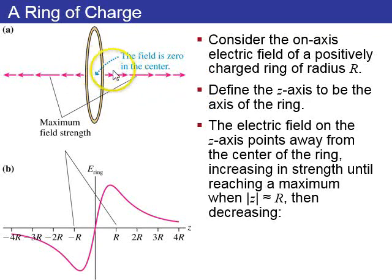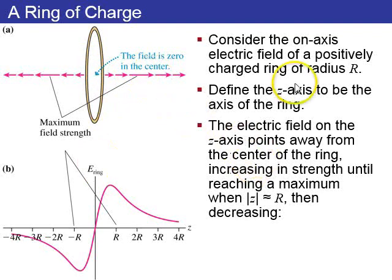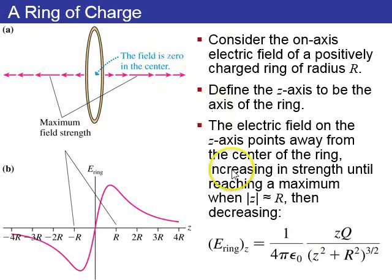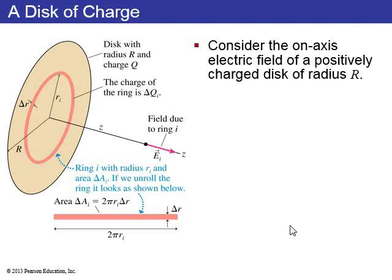Next, consider a ring of charge. By symmetry, the field at the very center of the ring is zero. Along the axis of the ring (the z-axis), the electric field has the form E equals Coulomb's constant times z times Q divided by (z squared plus R squared) to the power of 3/2, where R is the radius of the ring.